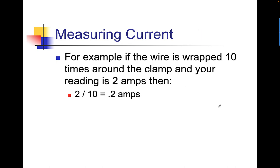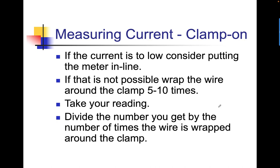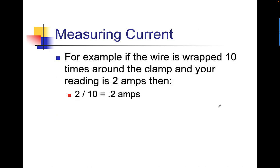You can also maximize the reading by wrapping the same wire on the same side of the circuit — like 10 times around the clamp — and if your reading is 2 amps, divide it by 10 to come up with 0.2 amps. If the current is too low, put the meter in line. If that's not possible because of voltages, wrap the wire around the clamp 5 to 10 times, take your reading, and divide the number you get by the number of times the wire is wrapped around the clamp. For example, if the wire is wrapped 10 times and your reading is 2 amps, then 2 divided by 10 is 0.2 amps.